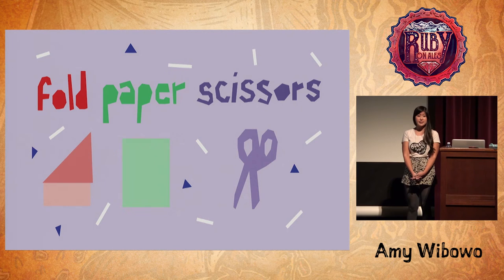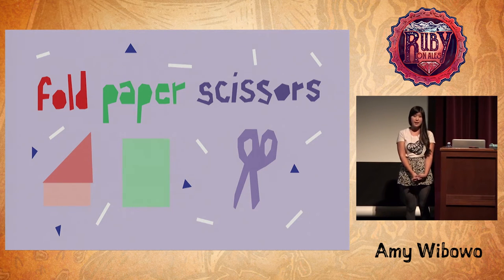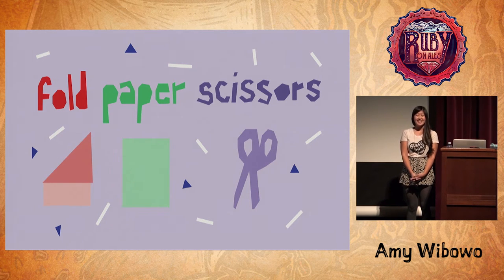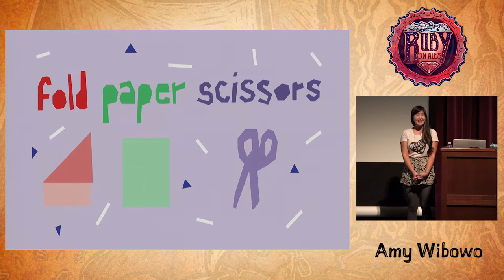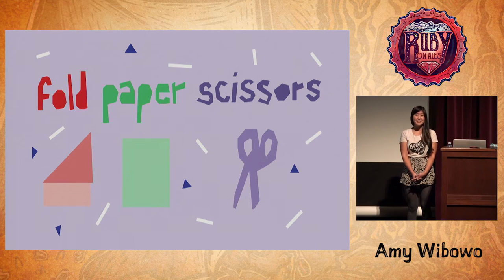When I was in college studying CS, I had to take a class that fulfilled an advanced algorithms requirement. Instead of taking the class called advanced algorithms, I opted to take a class called paper folding algorithms, which fulfilled the same requirement. That meant we spent every day in the classroom proving and talking about different theorems about origami, and this one was my favorite.